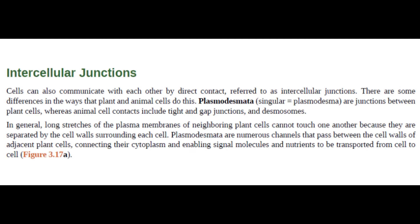Plasmodesmata — singular plasmadesma — are junctions between plant cells, whereas animal cell contacts include tight and gap junctions and desmosomes. In general, long stretches of the plasma membranes of neighboring plant cells cannot touch one another because they are separated by the cell walls surrounding each cell. Plasmodesmata are numerous channels that pass through the cell walls of adjacent plant cells, connecting their cytoplasm and enabling signal molecules and nutrients to be transported from cell to cell.